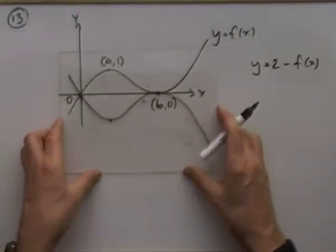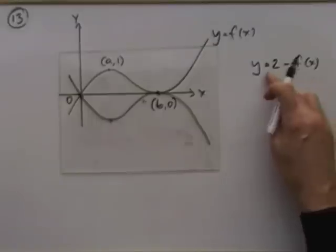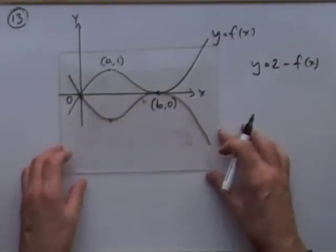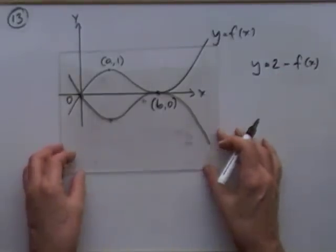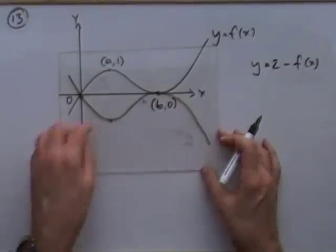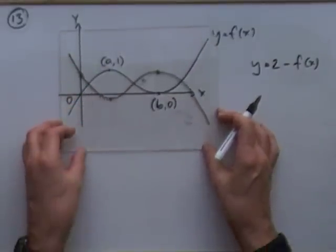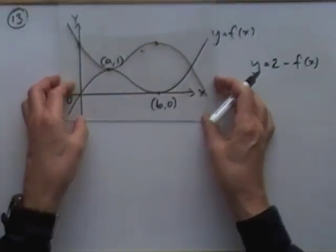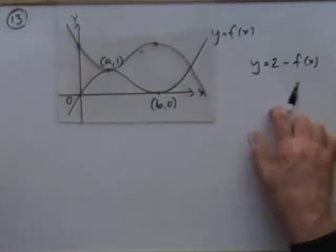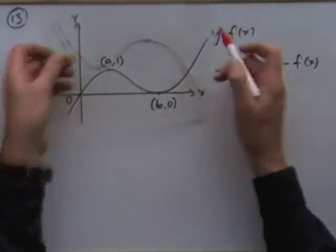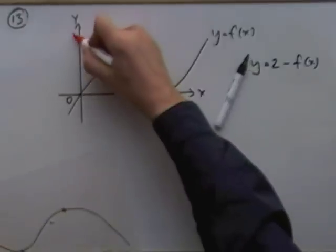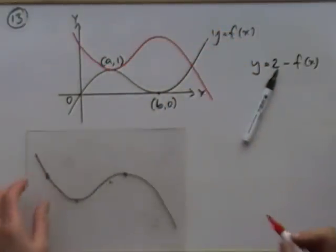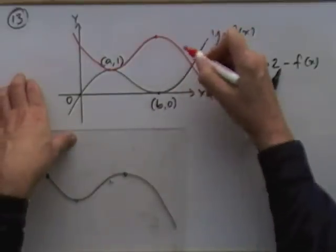That negative has nothing to do with the 2 — that belongs to f. That 2 means there's an additional shift up by 2, so the whole thing moves up 2. If that's one above and one below, that point is going to move up. The new graph is going to come down, go up, and then come down.